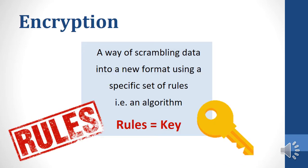Encryption is a way of scrambling data into a new format using a specific set of rules or an algorithm. The rules can also be referred to as a key, and the rules are mathematical rules which are used to change data into a totally different format that cannot be understood.